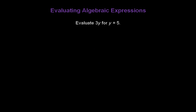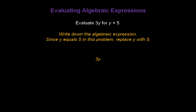Let's evaluate 3y for y equal to 5. First, write down the algebraic expression: 3y. Since y equals 5 in this problem, we'll replace y with 5, and I'll put parentheses around 5 so I don't mistake that for the number 35. Then solve the expression — 3 times 5 is 15.